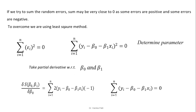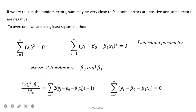If we try to sum the random errors, the sum may be very close to zero, because some errors are positive and some are negative. To overcome this, we use the least square method — we square the errors and equate to zero, because our aim is to make the error zero. We substitute epsilon_i and need to find beta0 and beta1 in an optimized way. Since there are two parameters, we take the partial derivative with respect to beta0 and with respect to beta1.